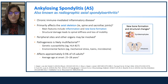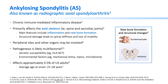Ankylosing spondylitis, also known as radiographic axial spondyloarthritis, is a chronic immune-mediated inflammatory disease that primarily affects the axial skeleton — the spine and the sacroiliac joints. Main features include inflammation and new bone formation. Structural damage leads to spine stiffness and loss of mobility. Paraarticular structures and other organs can be involved. Pathogenesis is likely multifactorial.